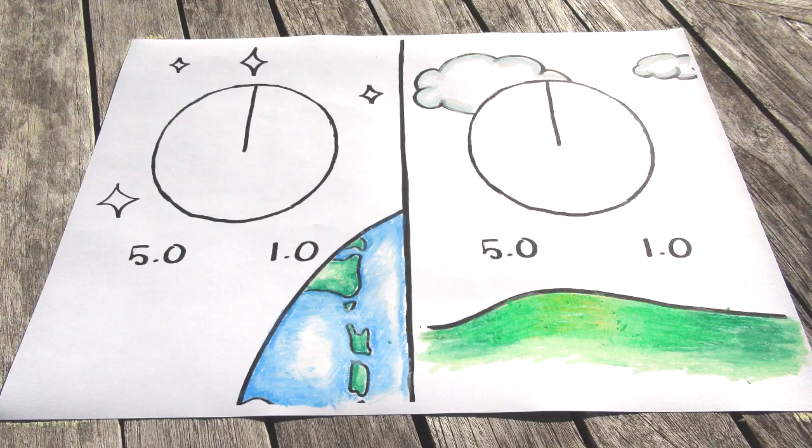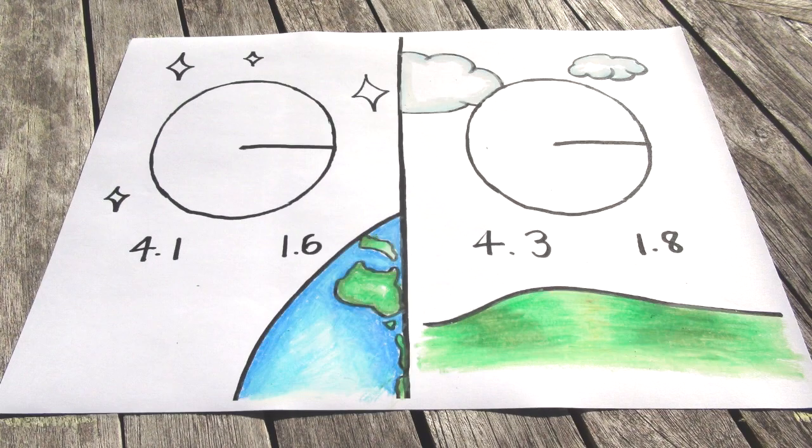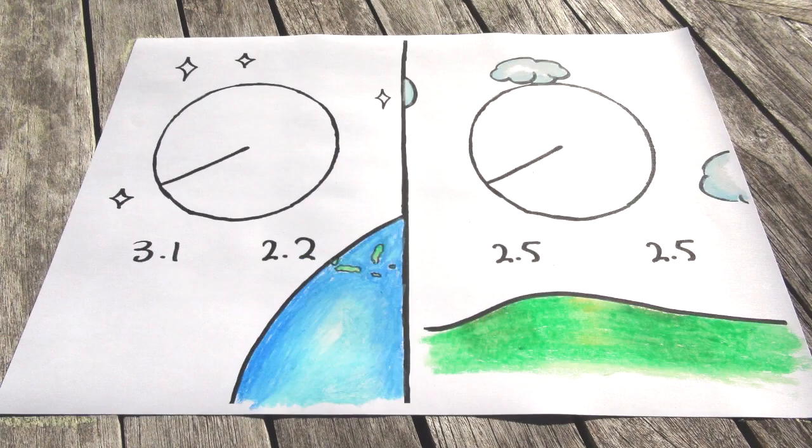The expected results for the experiment would be that the time taken for the readings of the ammeters to be the same would be longer in space than on Earth.